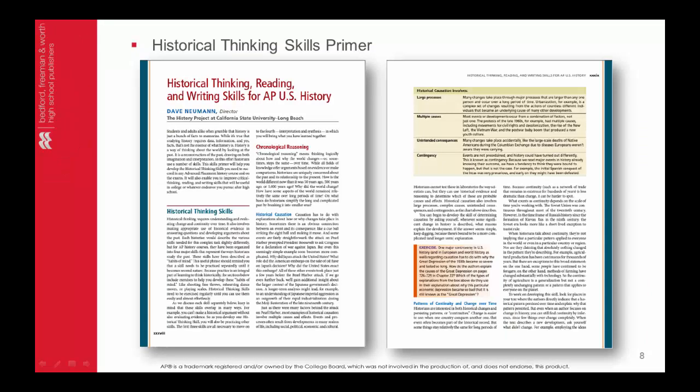The Historical Thinking Skills Primer, authored by David Newman, is a unique section in the front matter of the text, after the table of contents and lists of maps and features, that walks students through the steps to learn and practice the four skills emphasized by AP U.S. History: historical argumentation, chronological reasoning, comparison and contextualization, and interpretation and synthesis. Using concrete examples from the book, the Skills Primer also teaches students how to read and write like a historian and deploy all these skills on the AP U.S. History exam.